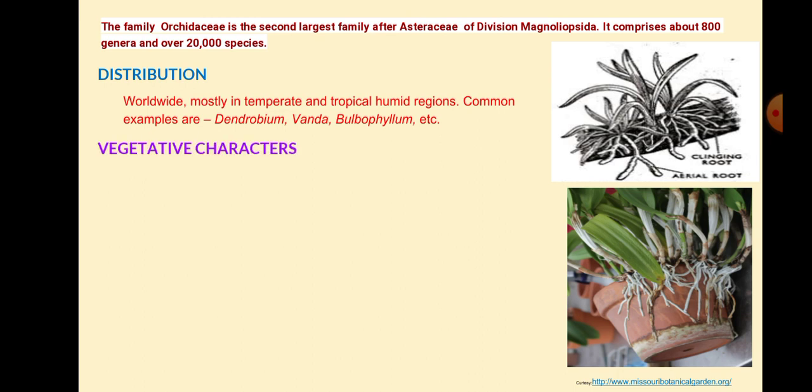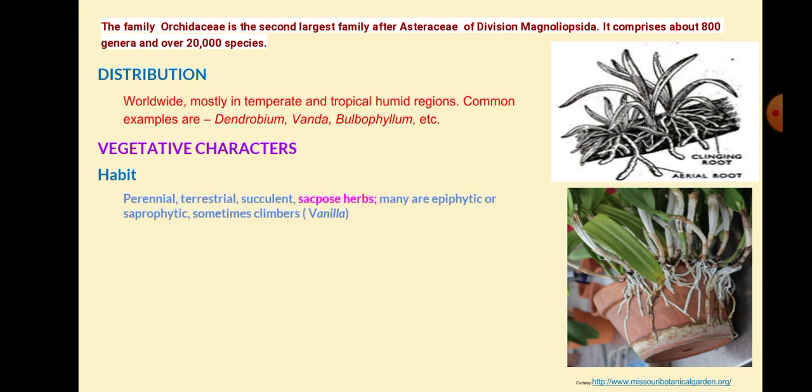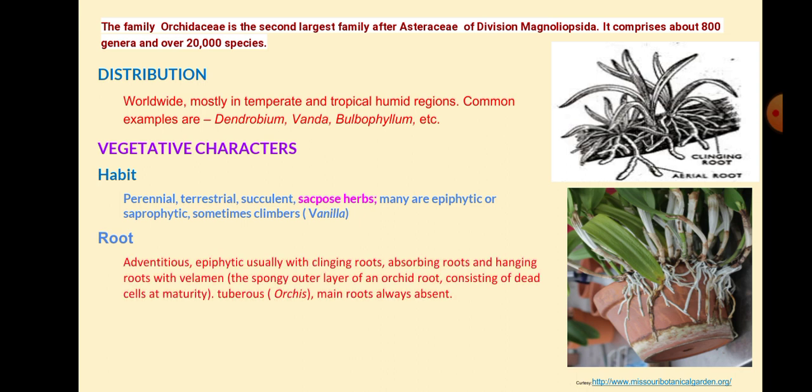Vegetative Characters. Habit: It is perennial, terrestrial, succulent, scapose herbs. Many are epiphytic or saprophytic. Sometimes climbing, as in Vanilla. Roots are adventitious and epiphytic, usually with absorbing roots and hanging roots.